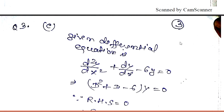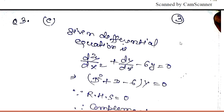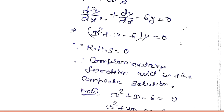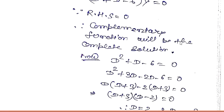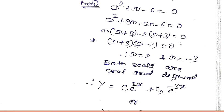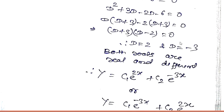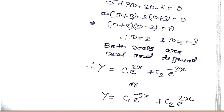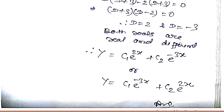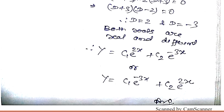Question number three: the differential equation is d²y/dx² + dy/dx − 6y = 0. The complementary function is the complete solution since the right-hand side is zero. Finding both roots, the solution is y = C1·e^(2x) + C2·e^(−3x), which can also be written as C1·e^(−3x) + C2·e^(2x).